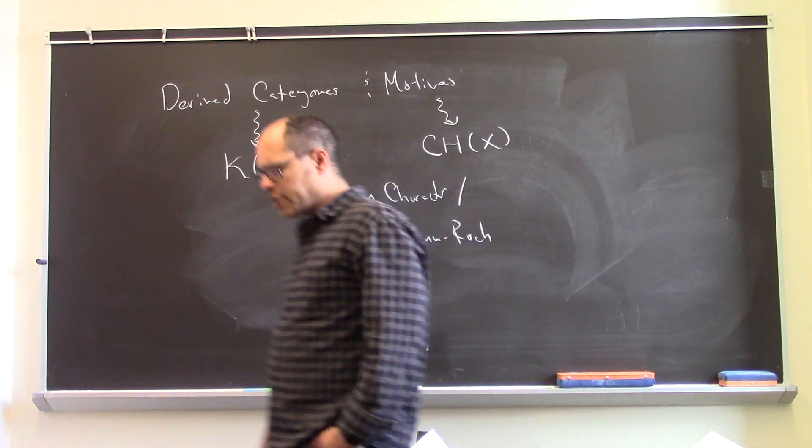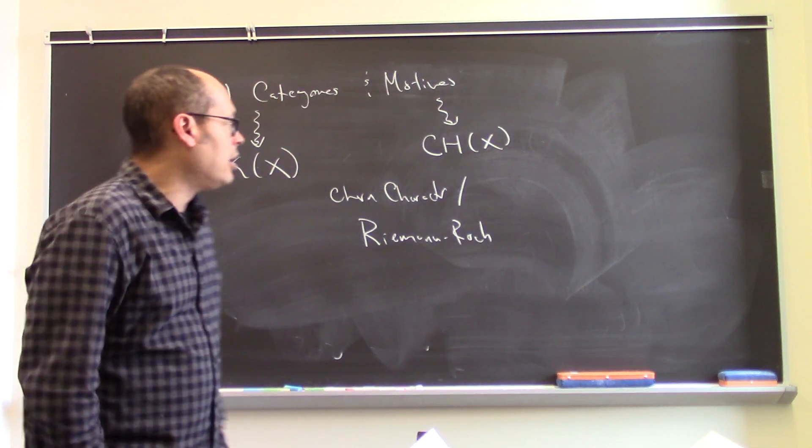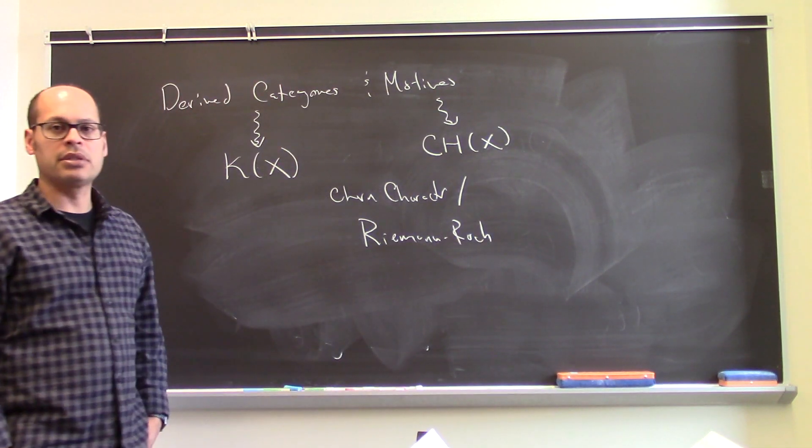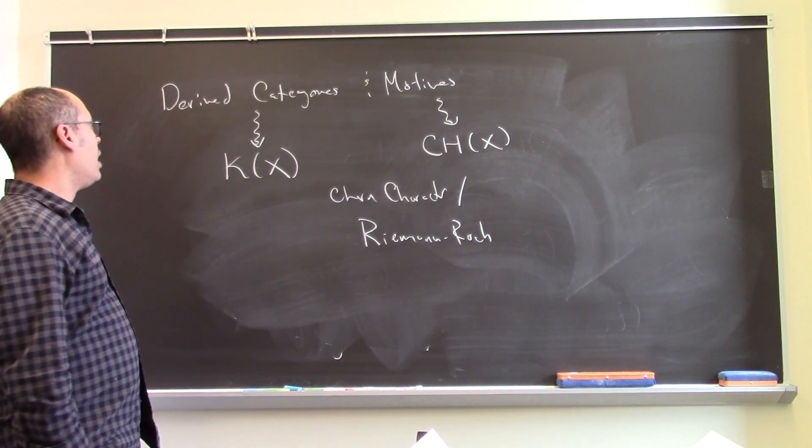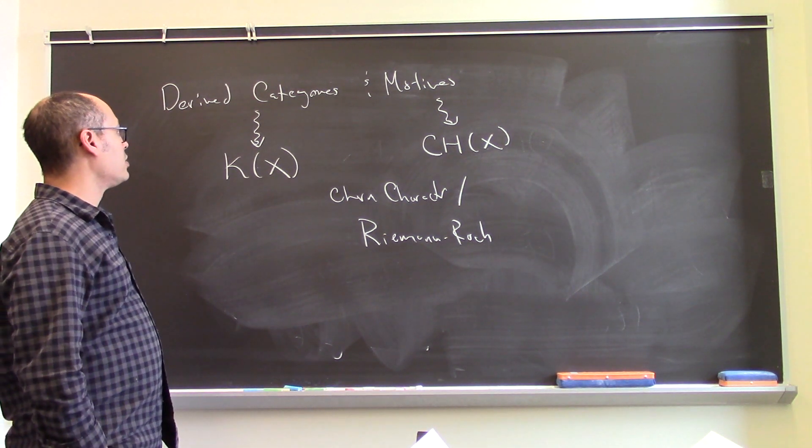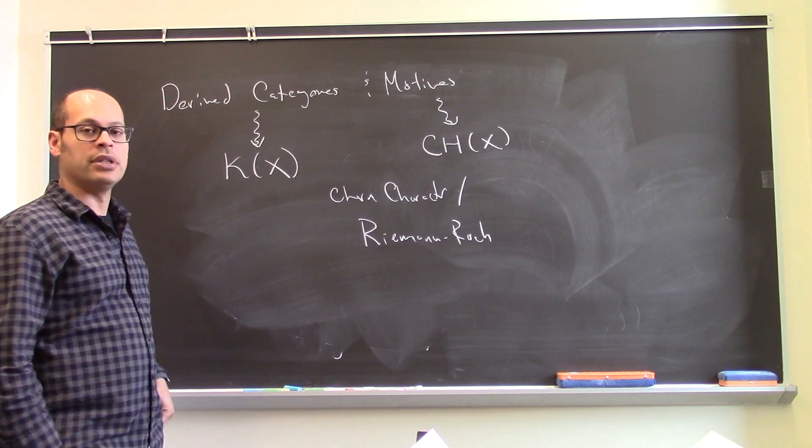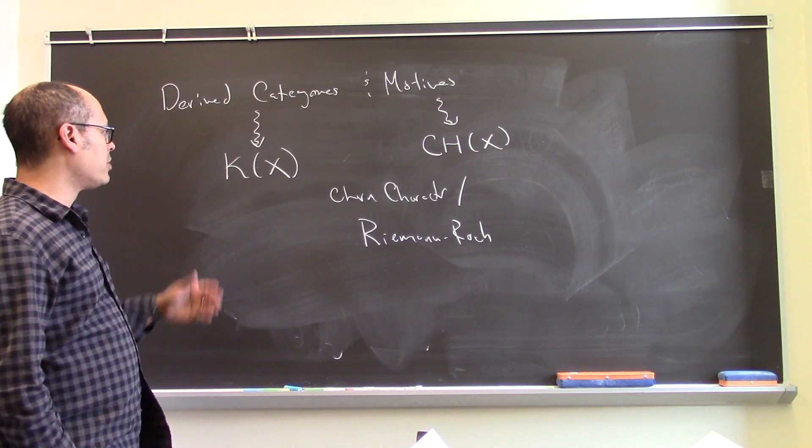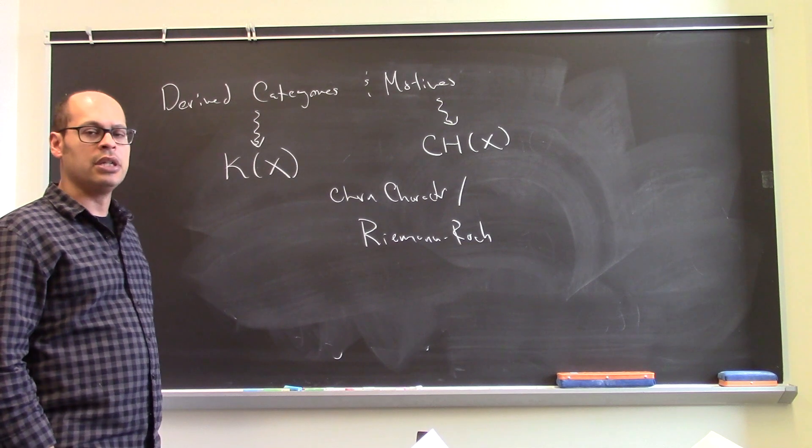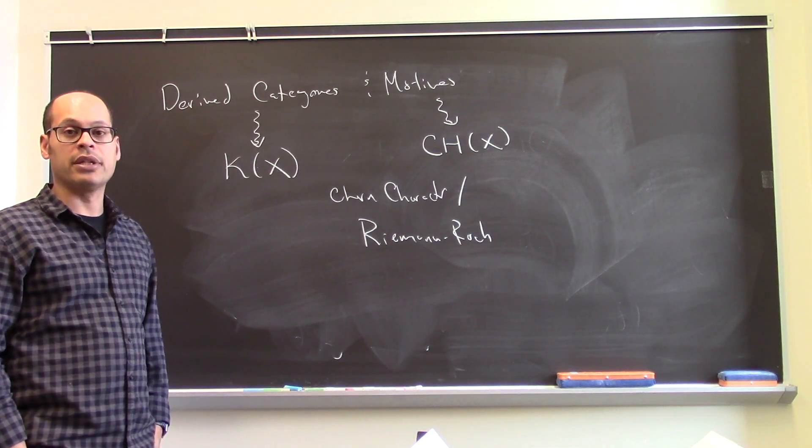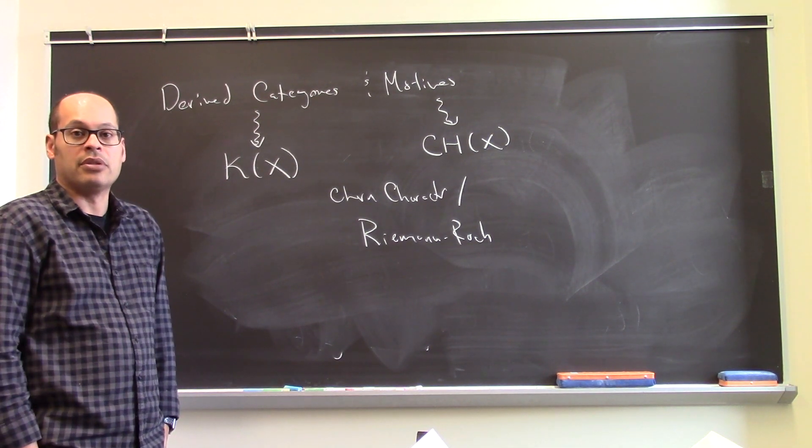So what I'd like to do now then is kind of define these objects, kind of a quick and dirty introduction slash series of definitions for derived categories and motives. I'll talk a little bit about the relationship between the K-theory and the Chow groups, and then we'll kind of speculate a little bit on how those might be generalized.